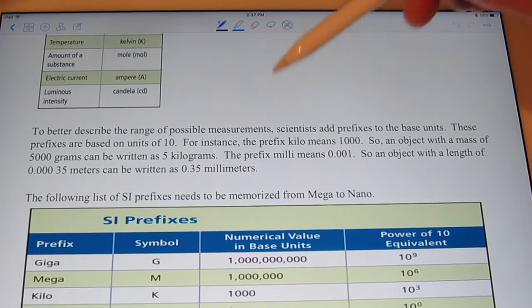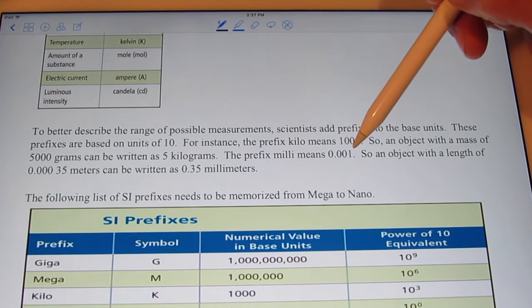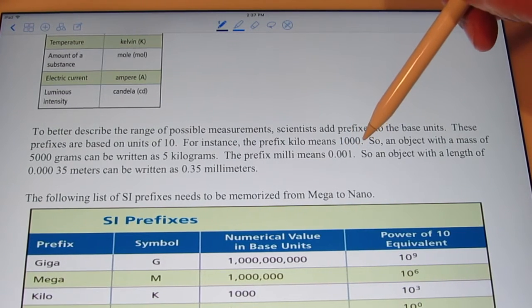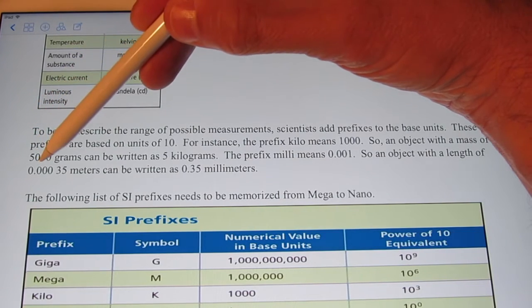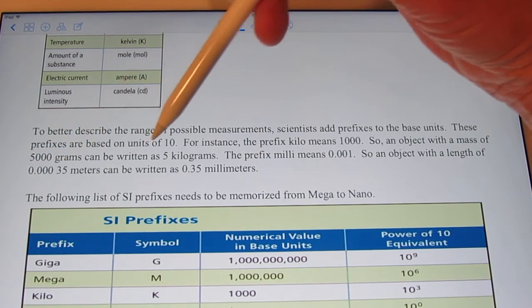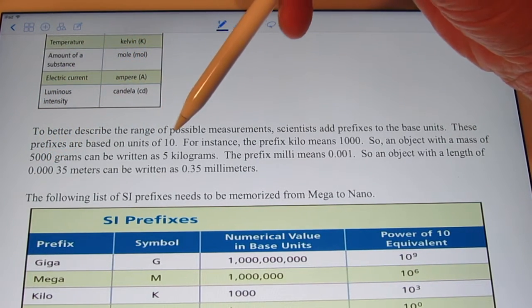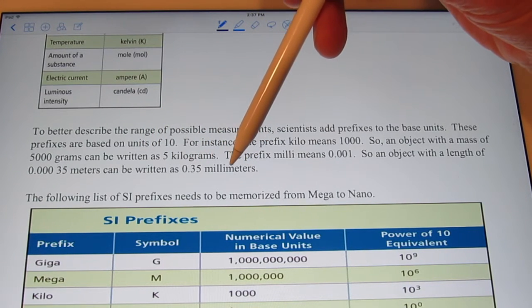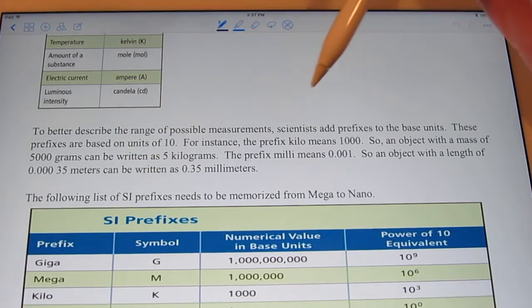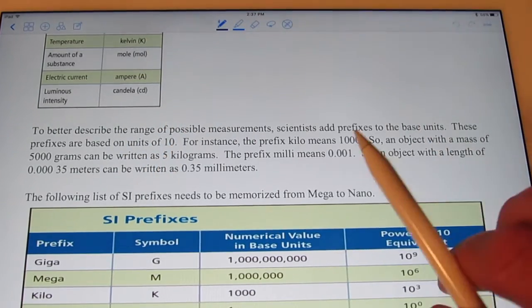Another example would be milli. The prefix milli means a thousandth. So an object with a length of .00035 meters can be written as .35 millimeters, or .35 thousandths of a meter.